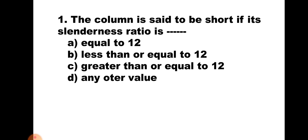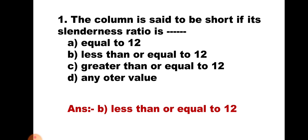Question number 1. The column is said to be short if its slenderness ratio is: A) equal to 12, B) less than or equal to 12, C) greater than or equal to 12, or D) any other value. When the slenderness ratio — the ratio of effective length to the least lateral dimension of the column — is less than or equal to 12, that column is said to be short. Hence the correct answer is B, less than or equal to 12.